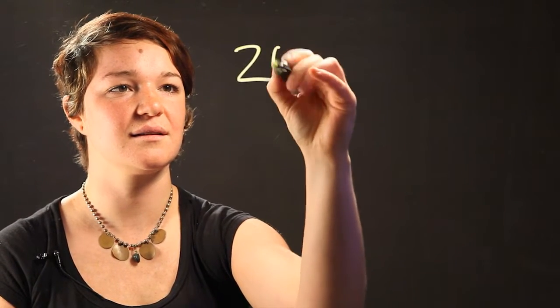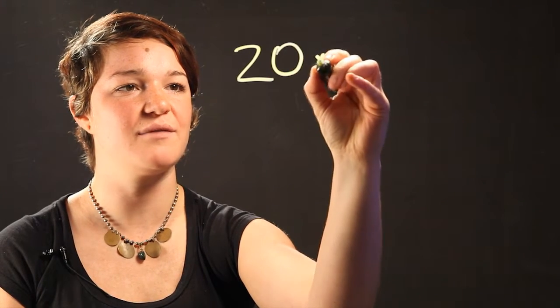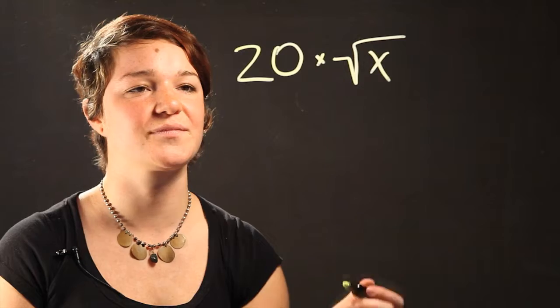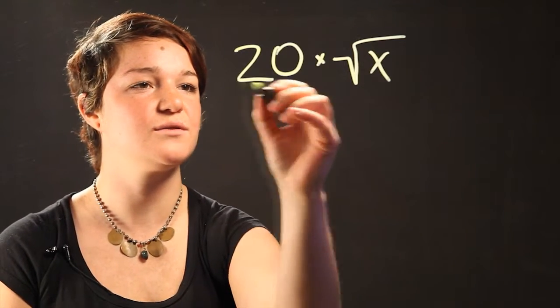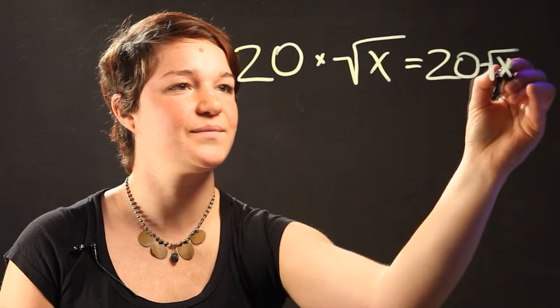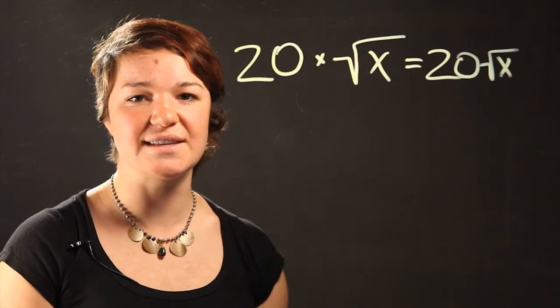Let's say we have a whole number such as 20, and we want to multiply it by a radical such as radical x. All you have to do is combine those two numbers together in an expression that says 20 radical x. You just have to take the multiplication sign out.